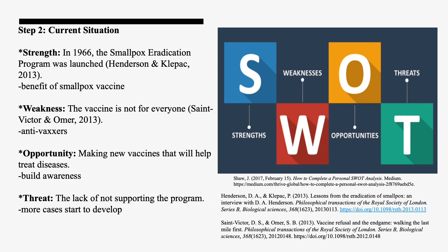Step 2: Current Situation. I decided to use a SWOT analysis. The strength is that in 1966, the smallpox eradication program was launched, which benefited from the smallpox vaccine. Weakness: the vaccine is not for everyone — there are anti-vaxxers who oppose vaccines for religious reasons or opposition to government. Opportunity: making new vaccines to help treat diseases, build awareness, and save lives. A threat would be the lack of support for the program, as anti-vaxxers who refused the vaccine contributed to an increase in cases.